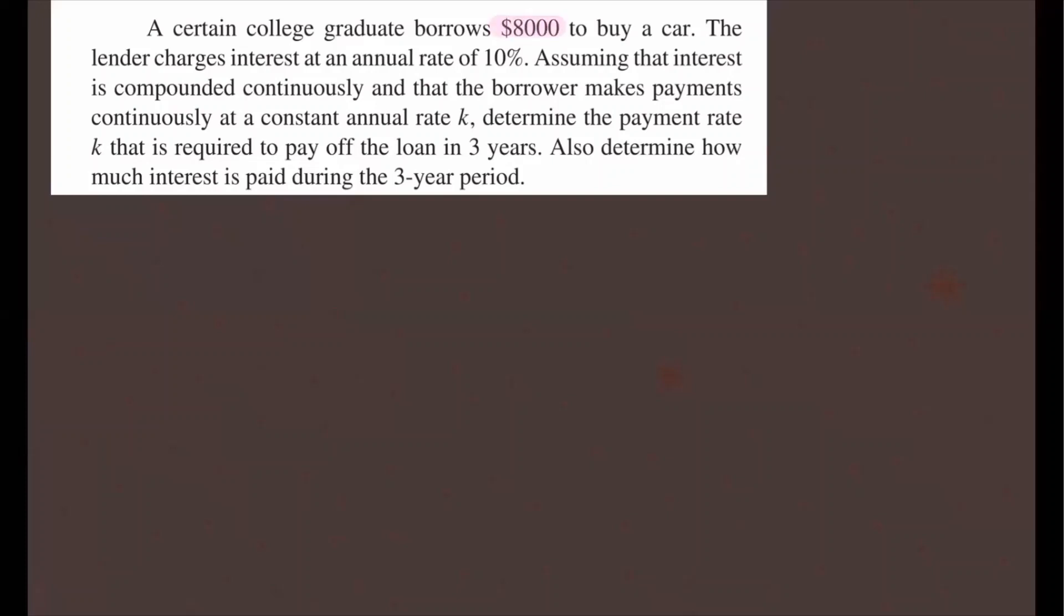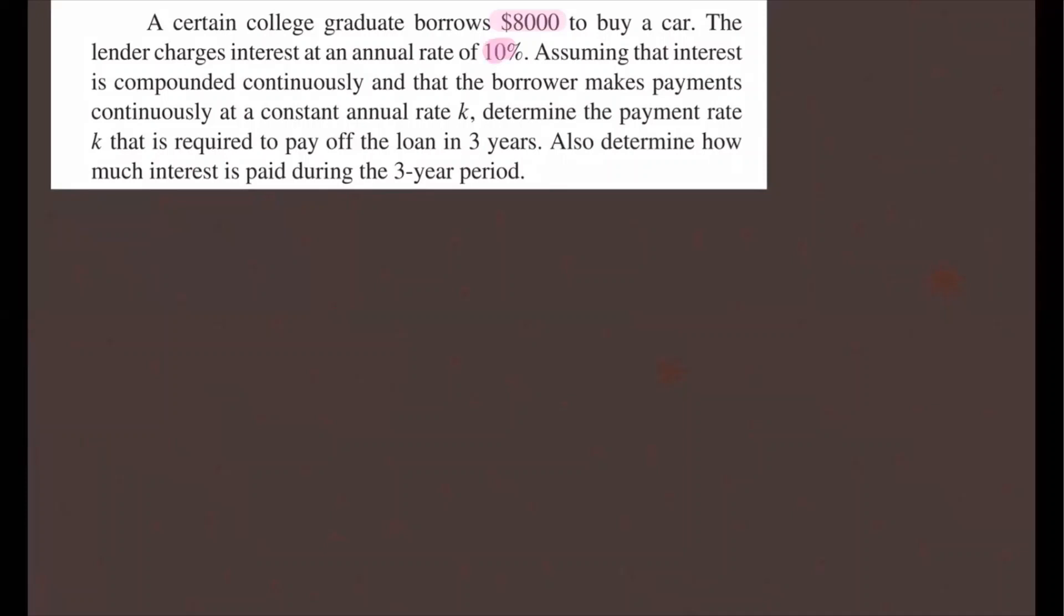The lender charges interest at an annual rate of 10%. Assuming that interest is compounded continuously and that the borrower makes payments continuously at a constant annual rate K, determine the payment rate K that is required to pay off the balance in three years and also determine how much interest is paid during the three-year period.